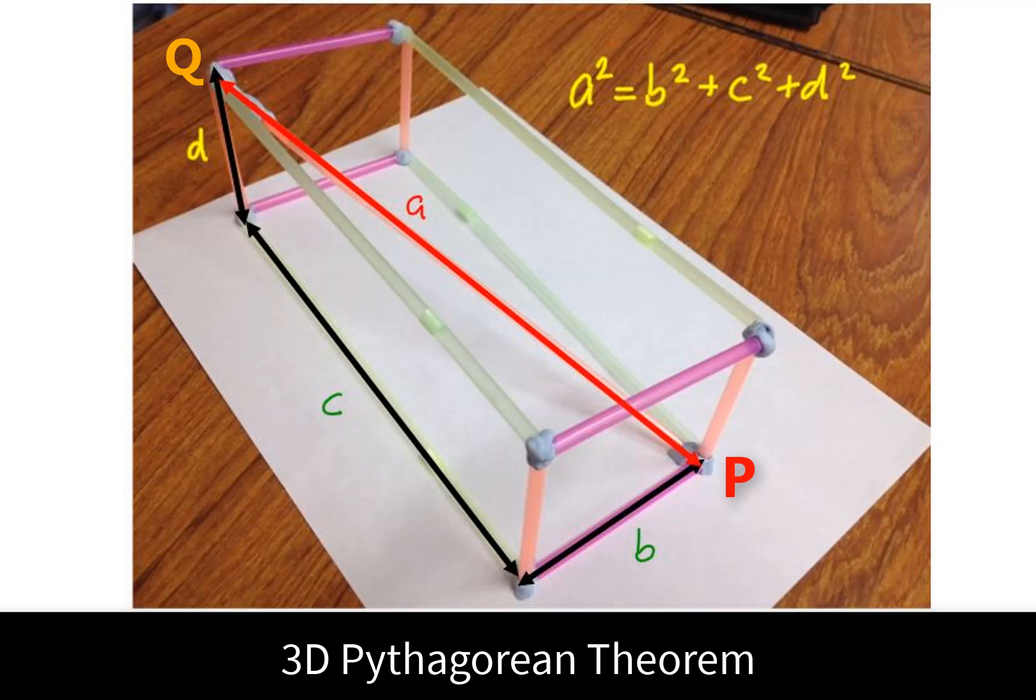And it turns out that any right angular pathway that you can take to get from P to Q, if you square each of the sides and sum these squares, it will be equal to the square of this diagonal.